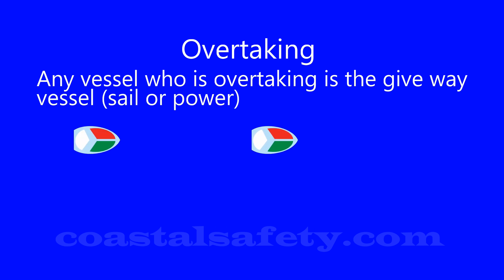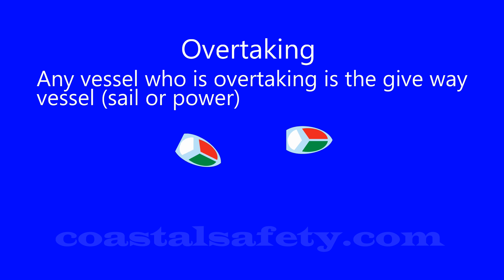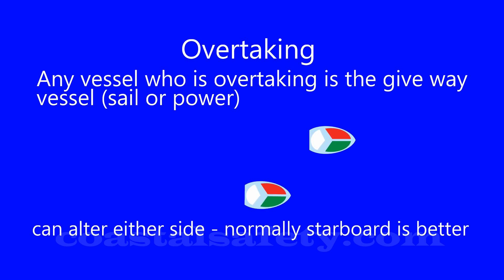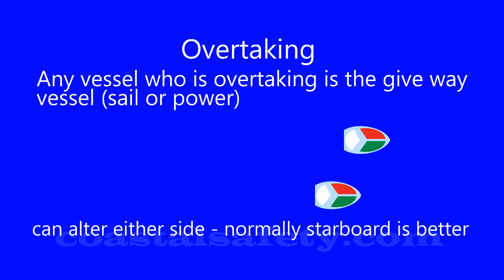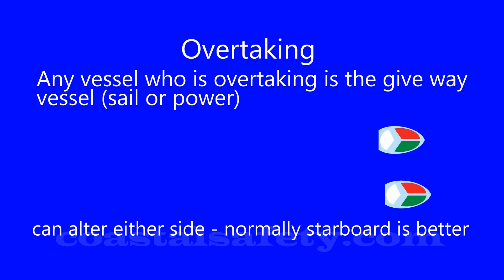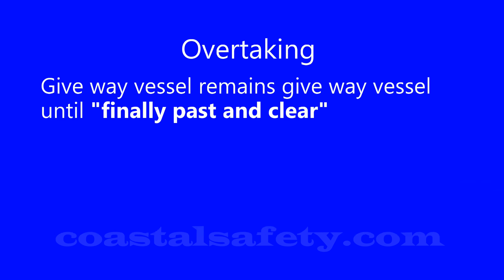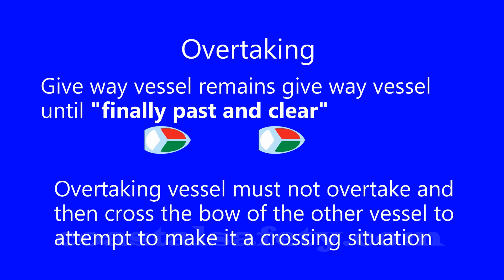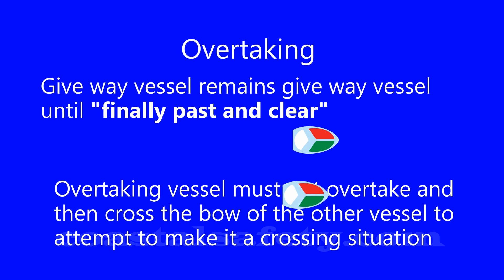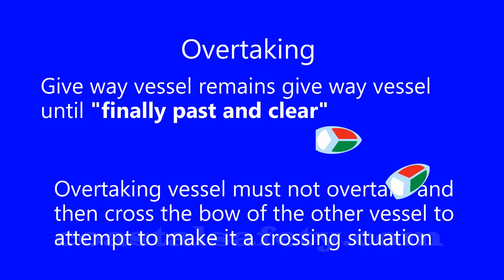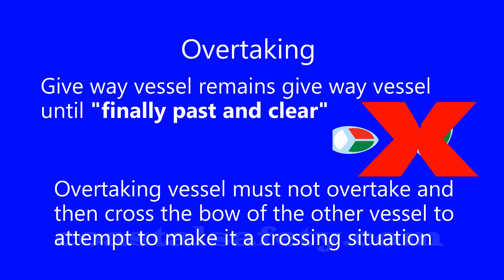For an overtaking situation, any vessel overtaking the other is the give-way vessel — this could be a sail vessel or a power vessel. Overtaking means you're approaching from behind, which means you can't see the coloured side lights, only the stern light. You can alter either side, but generally starboard is a better option. Remember, in an overtaking situation the give-way vessel remains the give-way vessel until finally passed and clear — she cannot cut across in front of the other vessel.